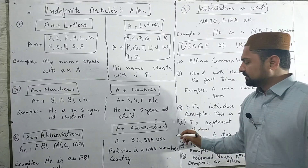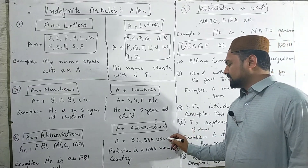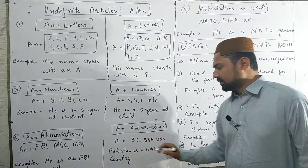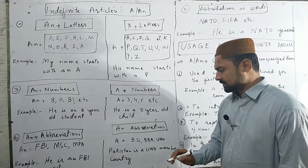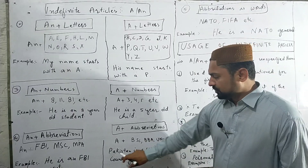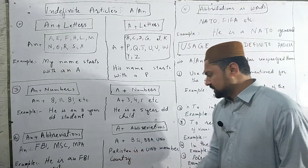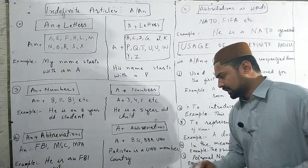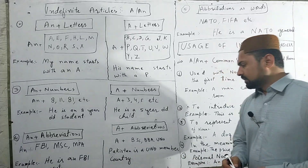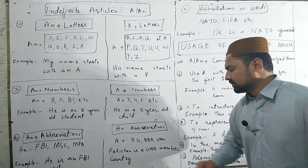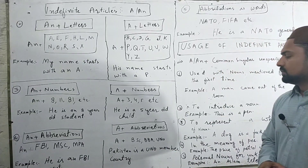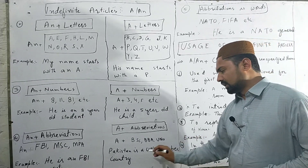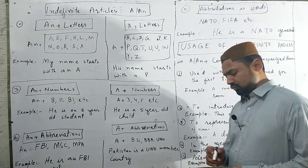UNO starts with the vowel sound U, but when pronounced as a letter it sounds like 'you', which is a consonant sound. For example: Pakistan is A UNO member country.